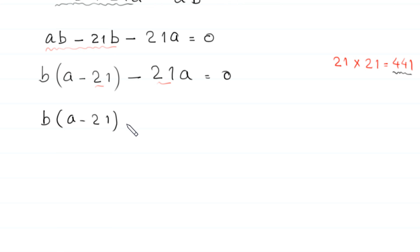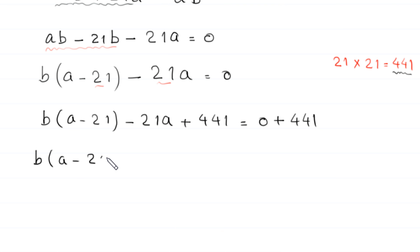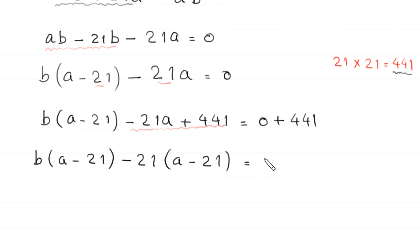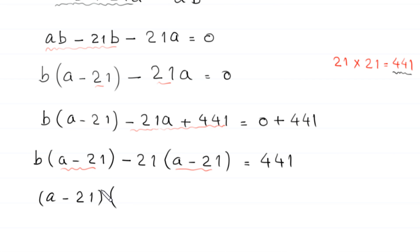This becomes b times (a minus 21) minus 21a plus 441 equals 441. From the terms negative 21a plus 441, we can factor out negative 21 to get negative 21 times (a minus 21). Since (a minus 21) is a common factor, we factor it out to get (a minus 21) times (b minus 21) is equal to 441.